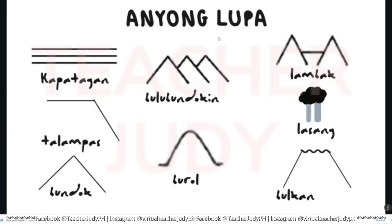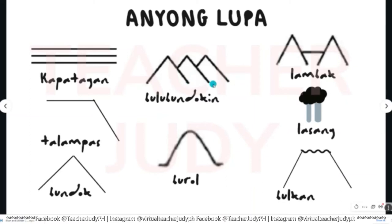Atong ilhon ang mga simbolo sa anyong lupa. Mao kining simbolo sa kapatagan, talampas, bundok or bukid, burol or buntod, bulubundukin o kabukiran, lambak, lasang, o ang bulkan. Sa daliri mahinumduman sa mga estudyante kining mga simbolo tungod kay drawings man sila.